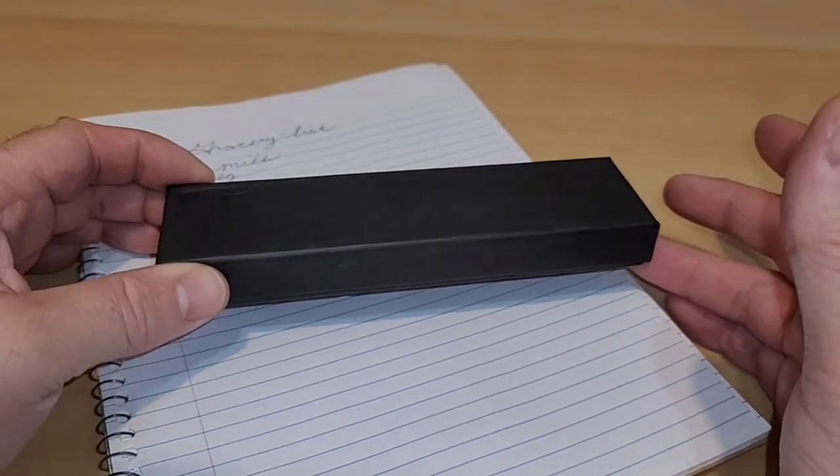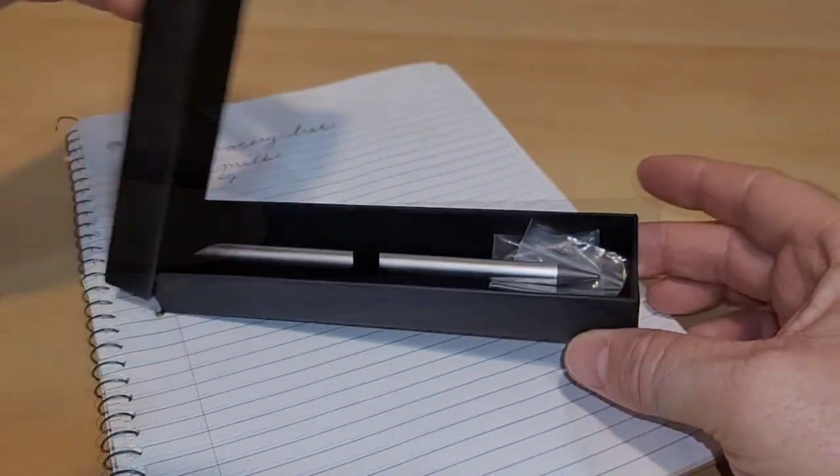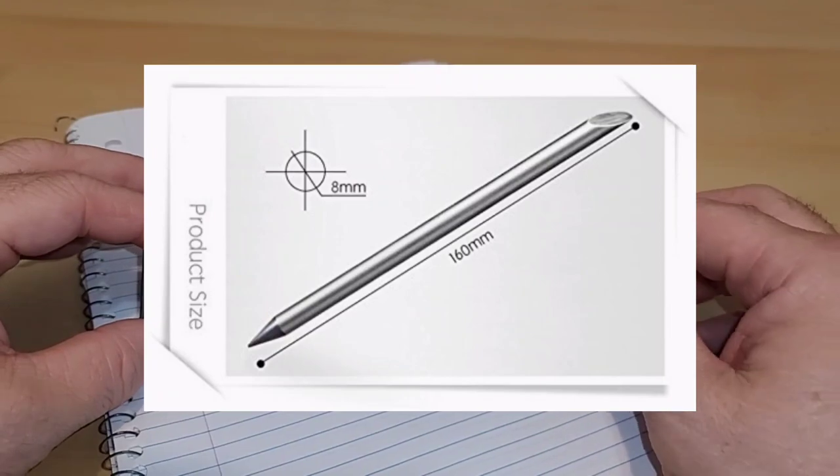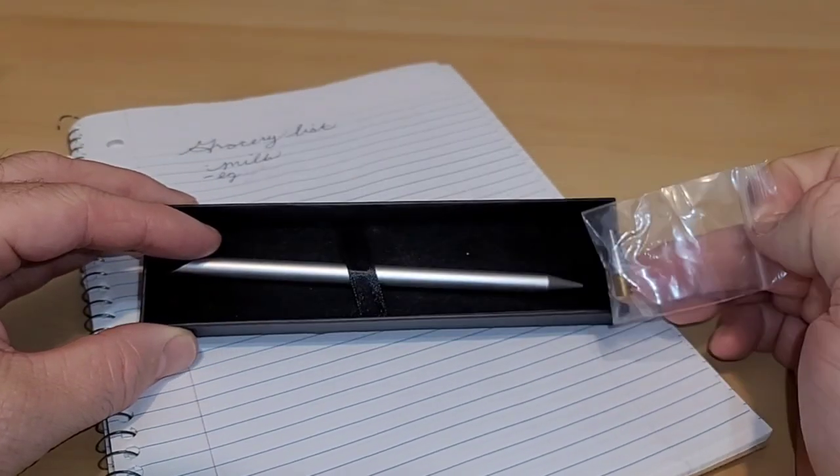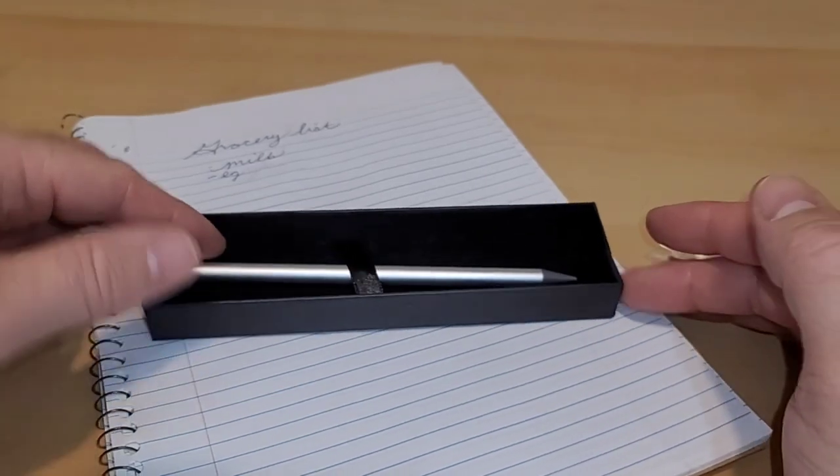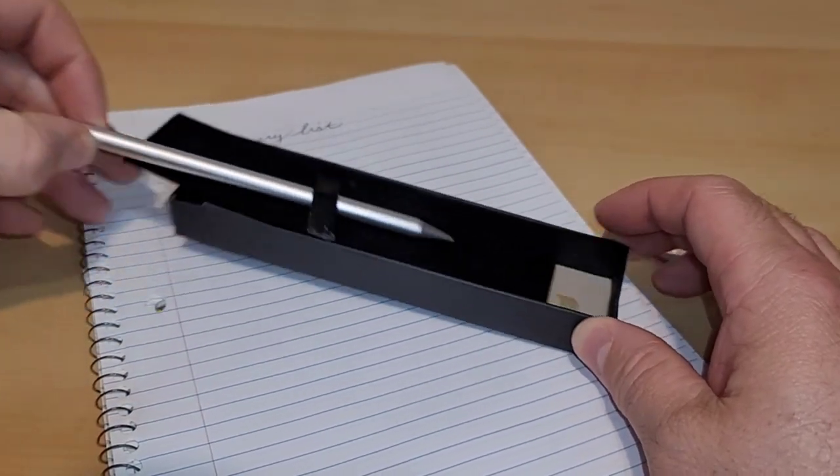Alright let's open up our box to see what we get. So there's our pen and it does look like it has a sleek design. I'm not sure what this is. Well it looks like an extra tip which is weird. Why would I need an extra tip if this is like a forever type of pen? Alright so let's open it up.